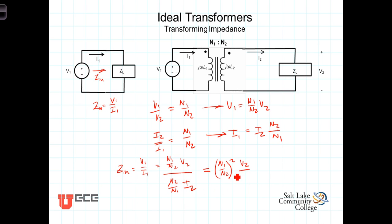So, with that correction, we get, still multiplying by the inverse of this, gives us the N1 over N2 squared in the numerator, and we're left with V2 over I2. But we see here that V2 over I2 is just Z sub L, so we get that the input impedance seen by the source is equal to N1 over N2 quantity squared times the load impedance.